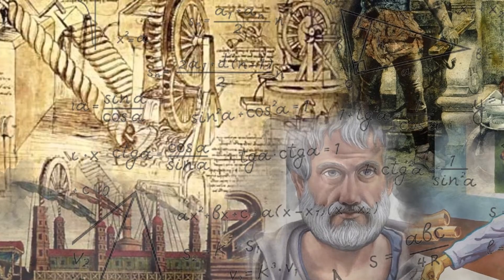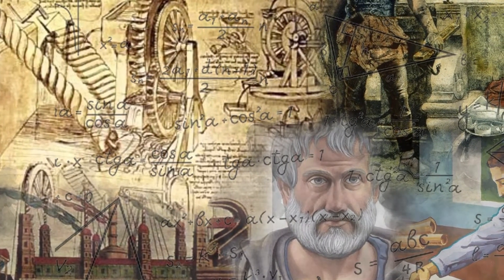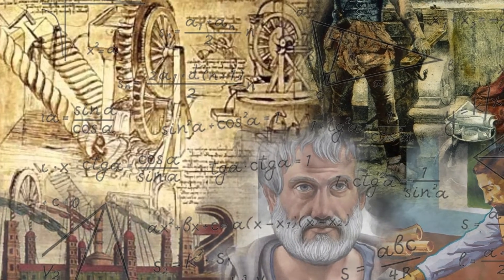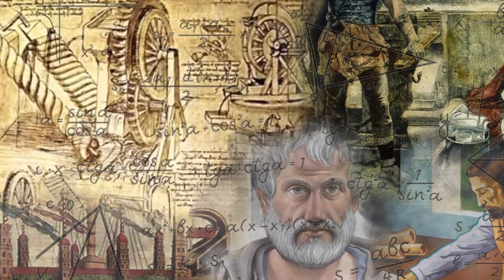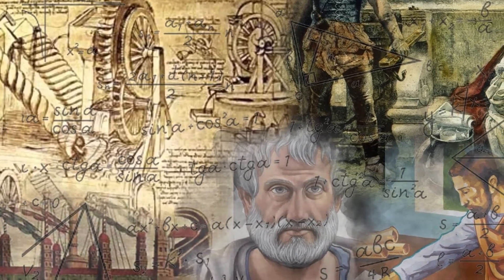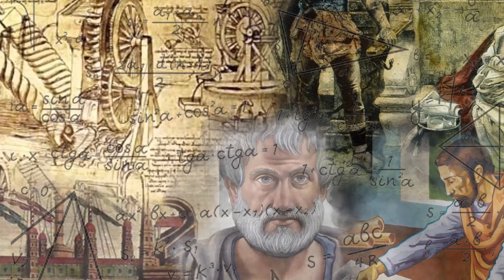Archimedes was born in 287 BCE in Syracuse in Sicily, which at the time was a Greek colony. A frontier town, Syracuse was wedged between Rome and Carthage, which were at war with each other. As a young man, Archimedes traveled to Alexandria in Egypt to further his education.